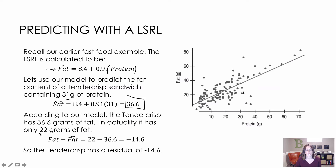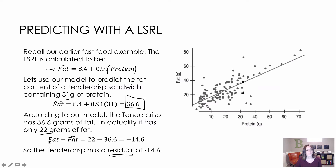The Tender Crisp actually has 22 grams of fat — that's likely this point right here on the graph. So the Tender Crisp has a residual of negative 14.6. Residuals are the distances between the predicted and actual values — specifically, actual fat content minus predicted fat content.